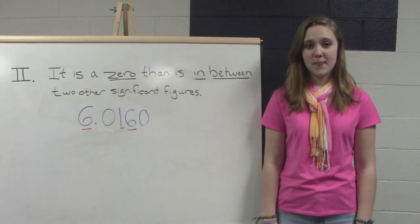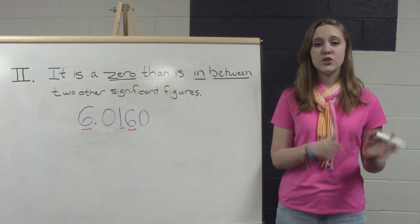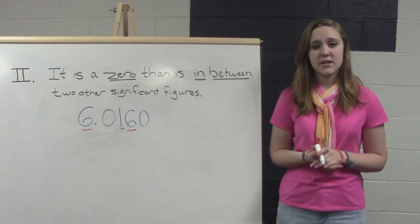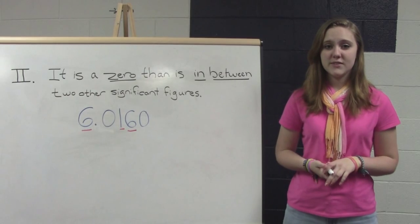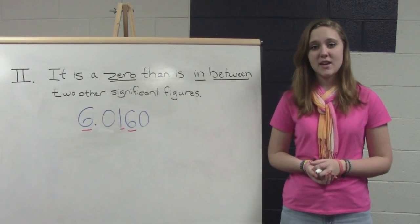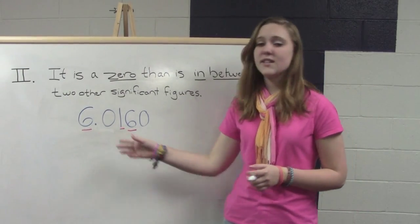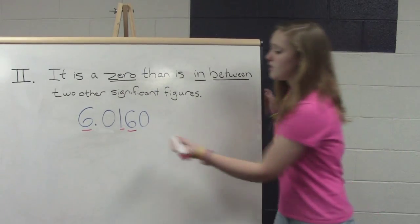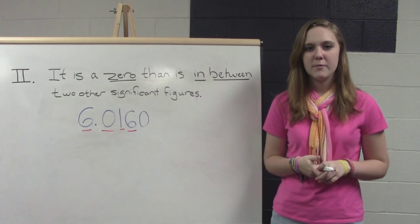Rule number two: if the number that you're looking at is a zero, and it's in between two other sig figs, then that one will also be a sig fig. In our number, we have a couple of zeros. The last one isn't in between any other sig figs. But this first zero is in between the 6 and the 1, which we already determined were sig figs. So that means that zero is significant as well.